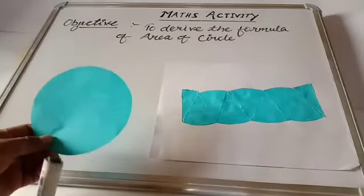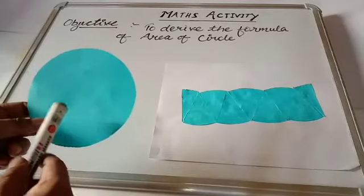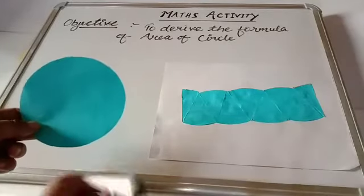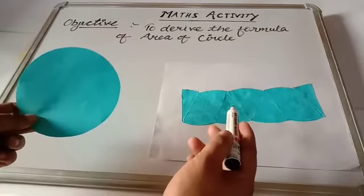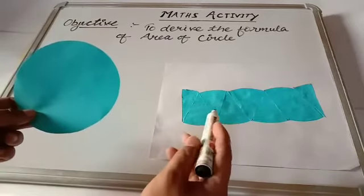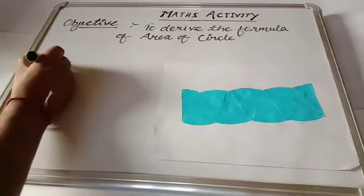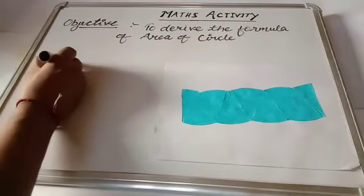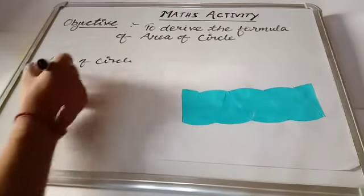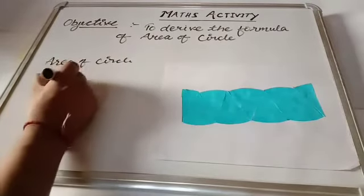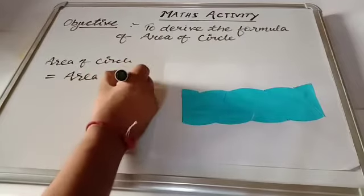Now, the space occupied by this circle — that is, the area of the circle — has been converted into a rectangle. So, from this figure, the area of the circle is equal to the area of the rectangle.